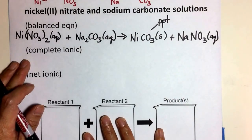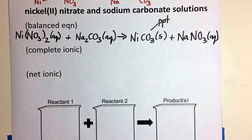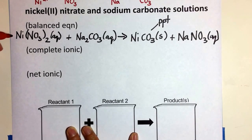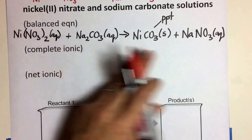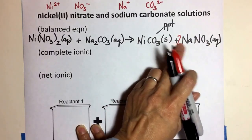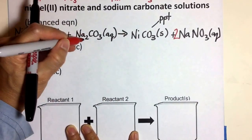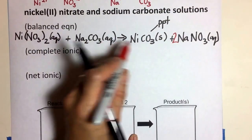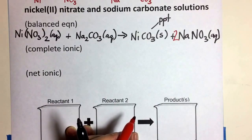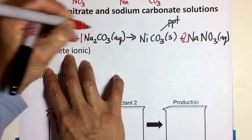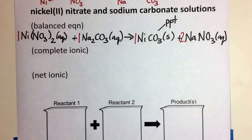So now I'm ready to balance this equation. Always have a balanced equation before you move on to the complete ionic or net ionic steps. We have two nitrates and I see one nitrate here, so I put a coefficient of two — and that will affect sodium, so there are two sodiums, and it looks like there are two sodiums here. Nickel looks balanced. Carbonate also looks balanced as a full ion. So we're ready now to proceed to the complete ionic equation.